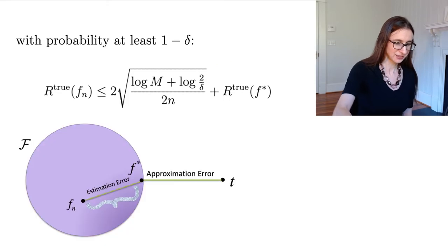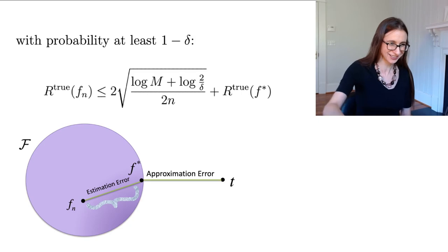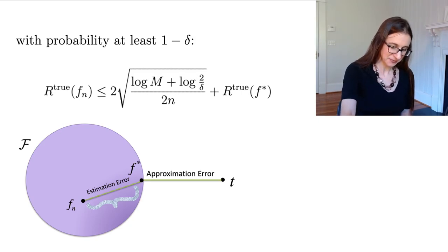All right, cool. So going back to the figure here, we now have a bound that tells us about the true risk of f n, which of course we can't measure, and how it relates to the true risk of f star, which is the best in class model, and then also the log M term.